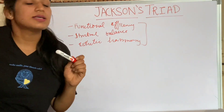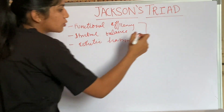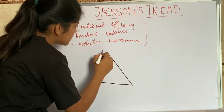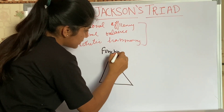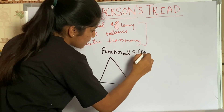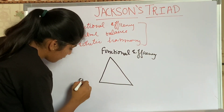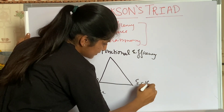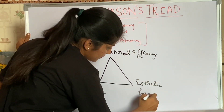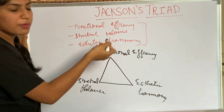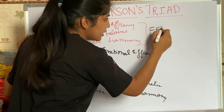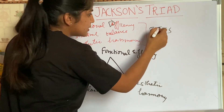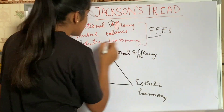These three parts form a triad — like a triangle. We have a triangle in which the three points are: functional efficiency, structural balance, and aesthetic harmony. The mnemonic to remember this is FES — F for functional efficiency, E for aesthetic, and S for structural.